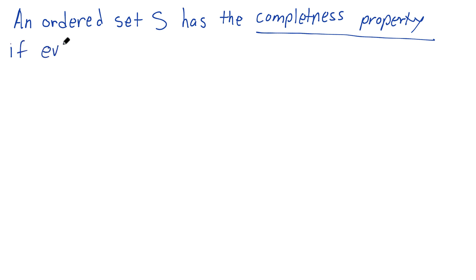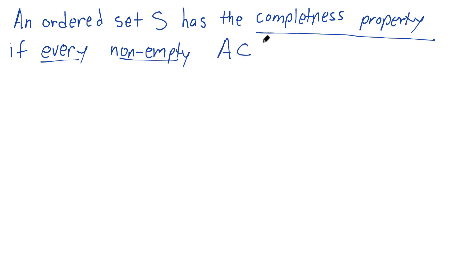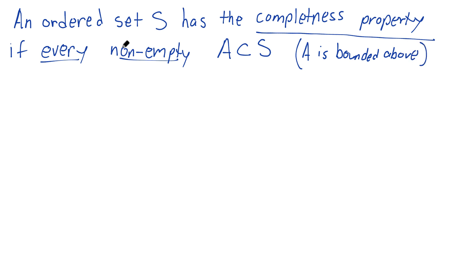An ordered set S has the completeness property if every non-empty subset A of S — there's got to be something in there — that is bounded above, has a supremum. So A is a bounded, non-empty subset of S, and it must have a supremum.